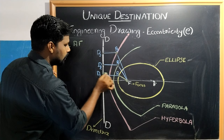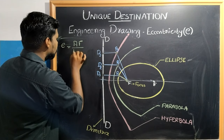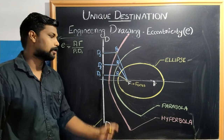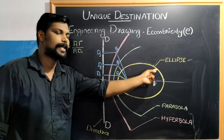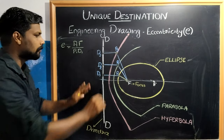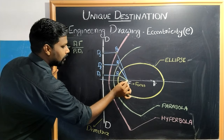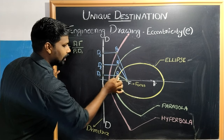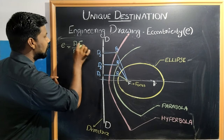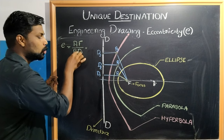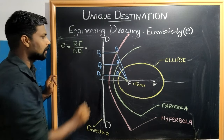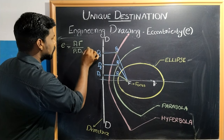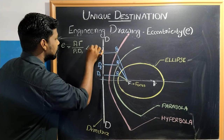For an Ellipse, consider point P1. The ratio P1F to P1D1 gives the eccentricity of the ellipse. Similarly, the ratio P2F to P2D1 gives the same eccentricity value. The eccentricity of an ellipse is always less than 1.